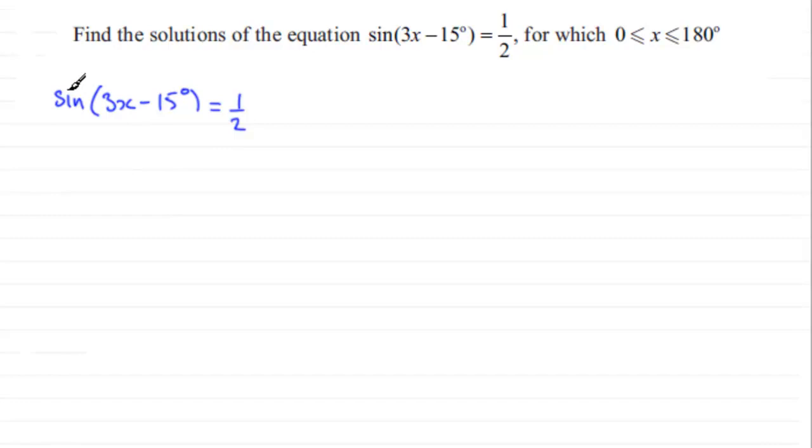And we need to remove the sine here, so what we do is we take the inverse sine of both sides. So that's going to give us 3x - 15° = sin⁻¹(1/2).